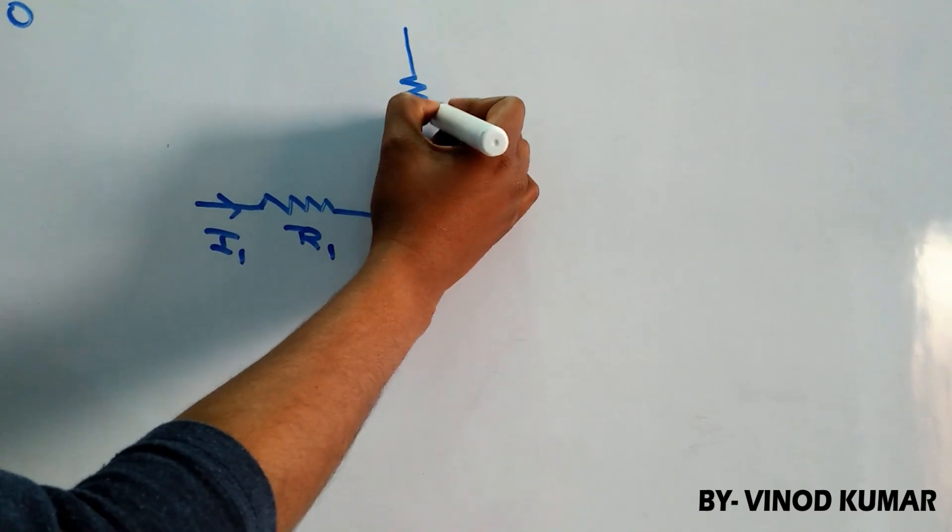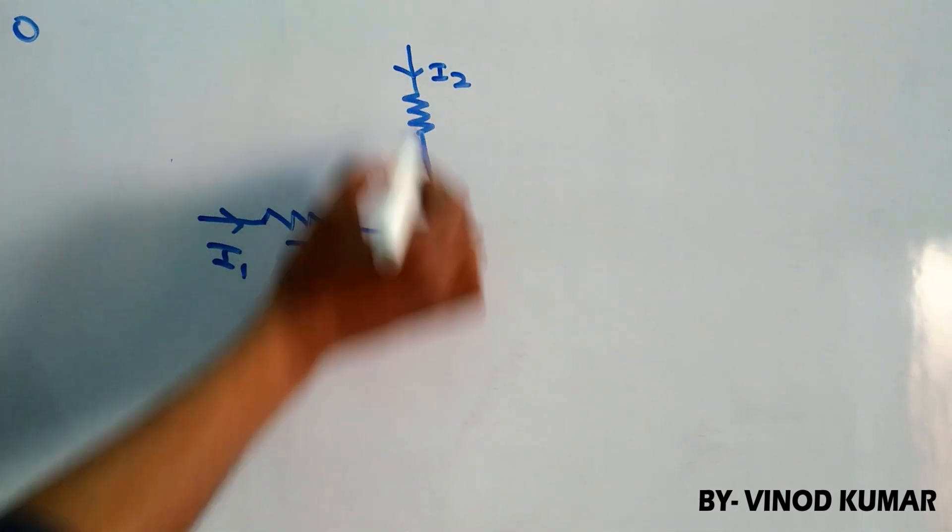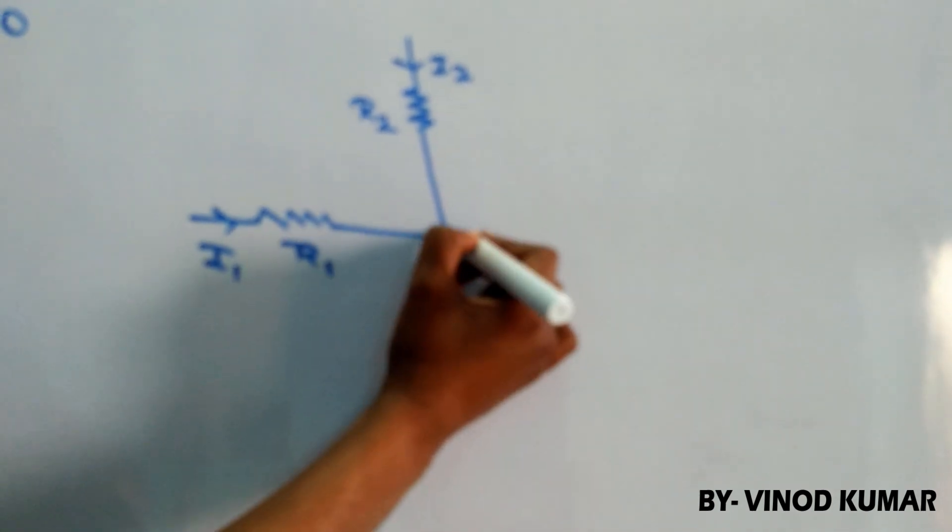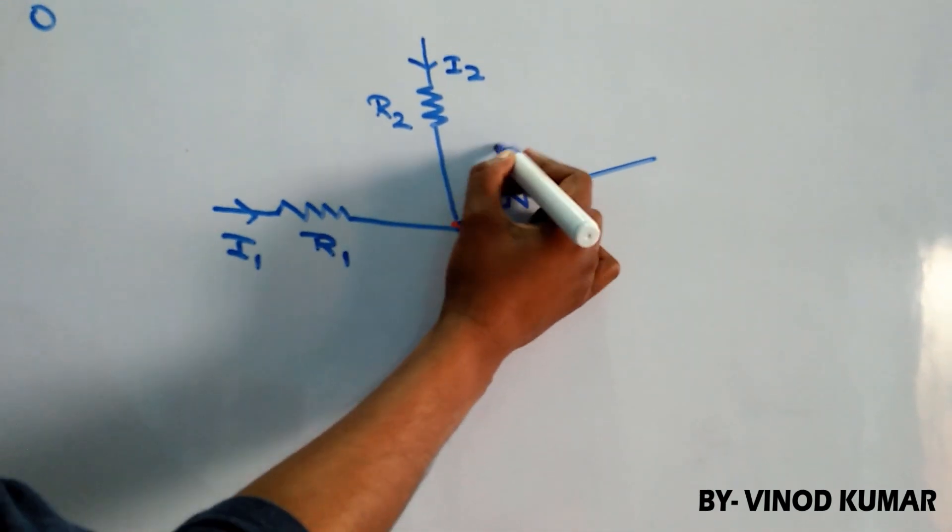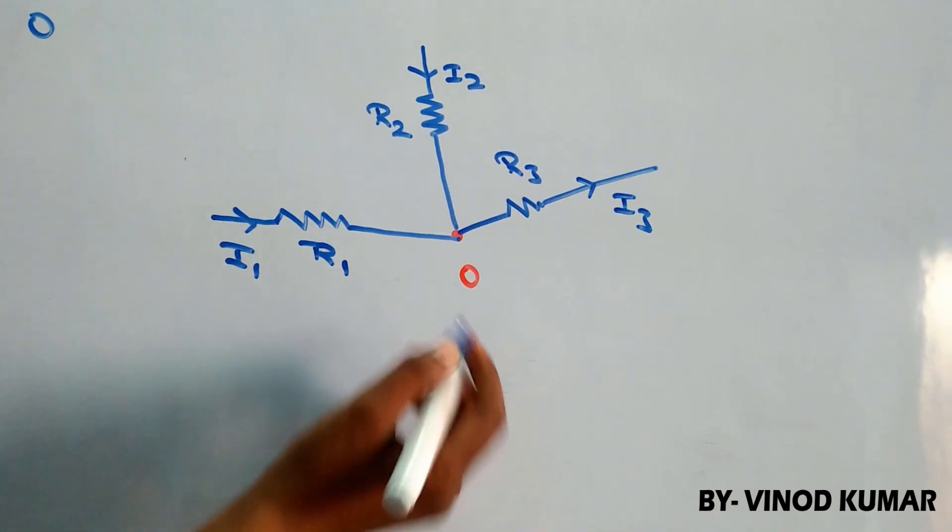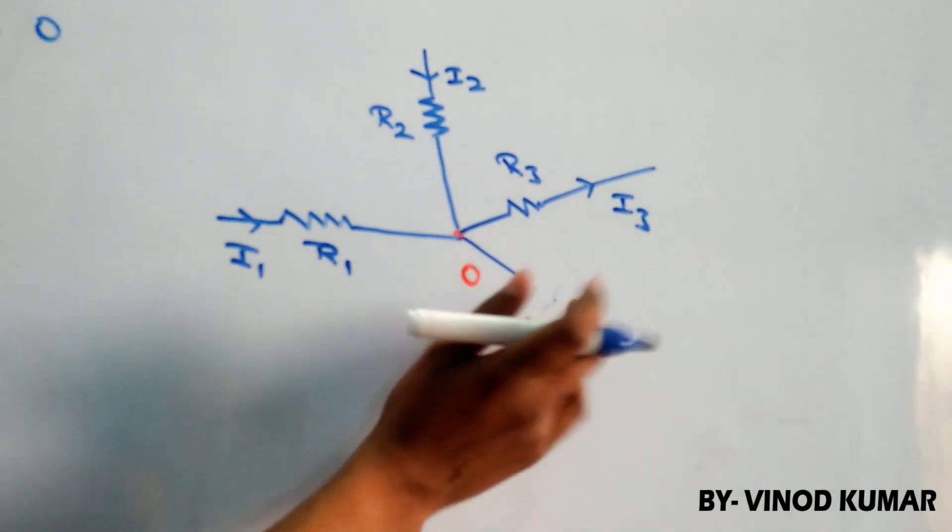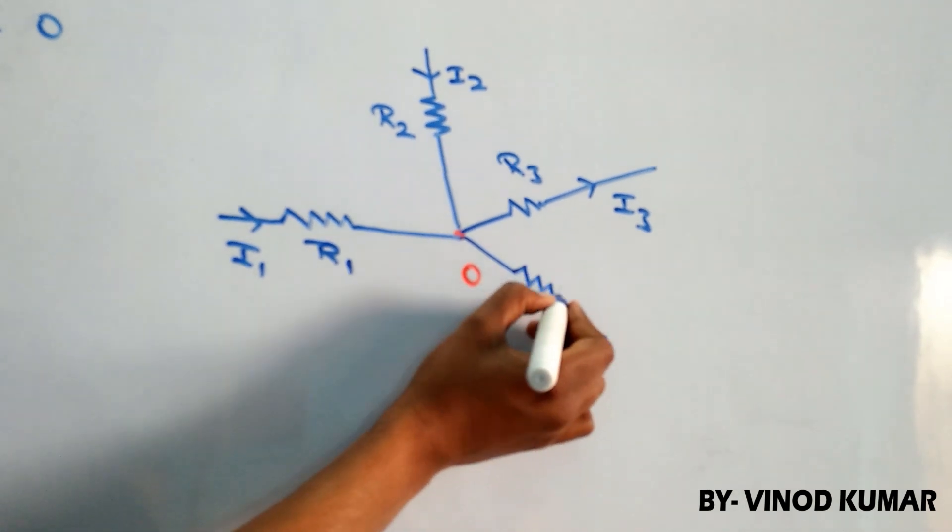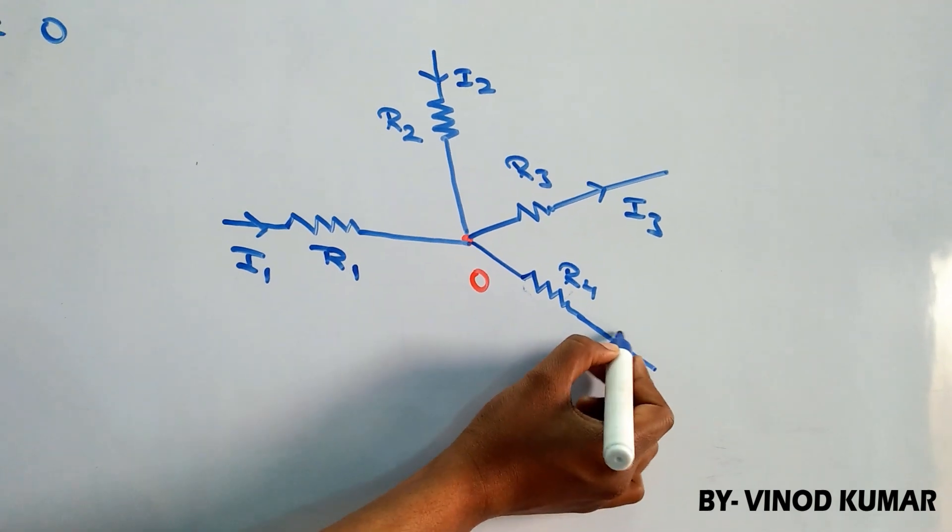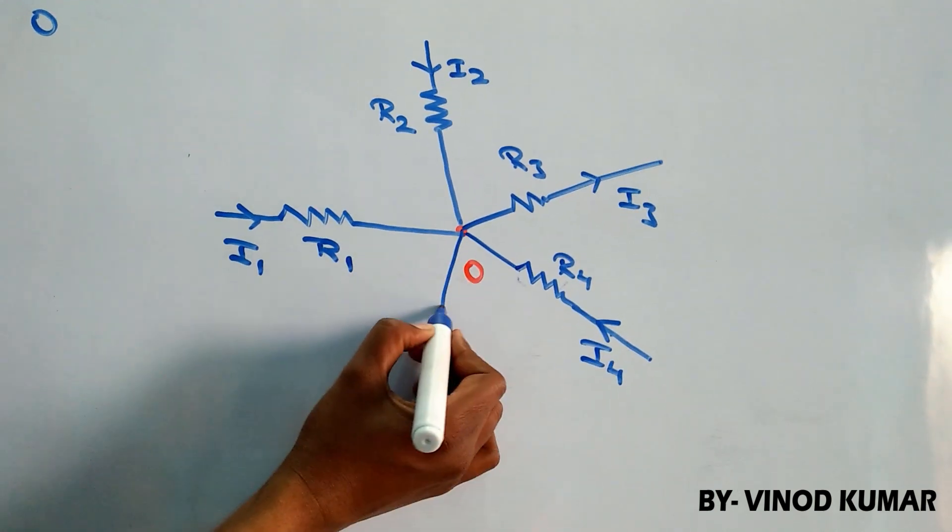Another branch is here in which I2 current is flowing and it is also moving through the resistor R2 towards the junction. Third branch is there containing a resistance R3 and current I3 is moving away from this junction. Another branch I have taken here also one resistor is connected R4 and in this a current is moving towards the junction.